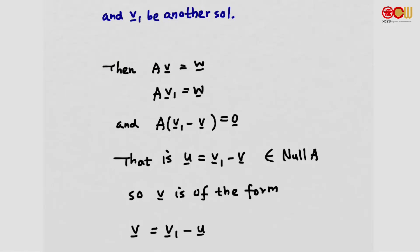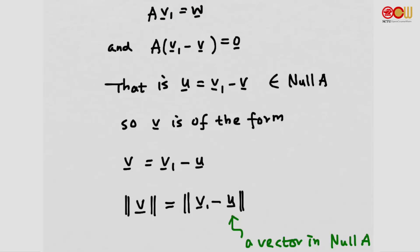If we call that vector u, then u is in the null space of A. Rearranging, v equals v1 minus u. Considering the norm of v, that is the norm of v1 minus u, where u is a vector in the null space of A. Since v1 is given, minimizing the norm of v is the same as choosing u in the null space of A to minimize this quantity.